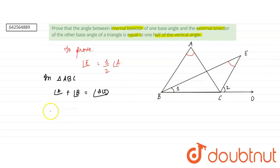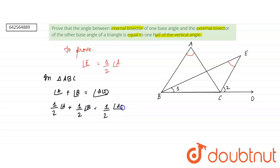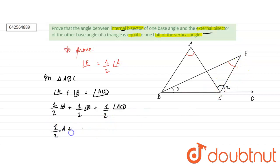If we divide each angle by two, we get: half angle A plus half angle B equals half angle ACD. Since CE is the external bisector of angle C, half of angle ACD is angle 2.